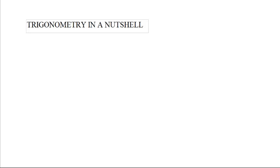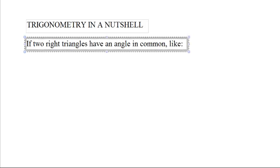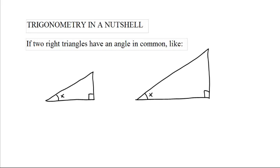Okay, now for the trigonometry that people call trigonometry. Suppose we have two right triangles that have an angle in common, a big one and a small one. They're right triangles that have an angle of x.